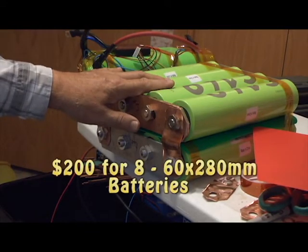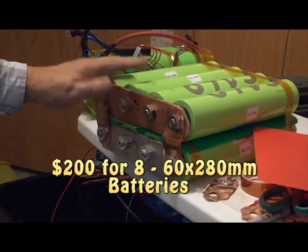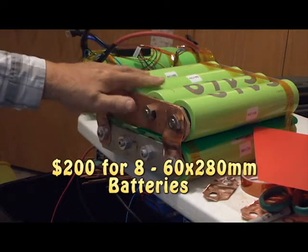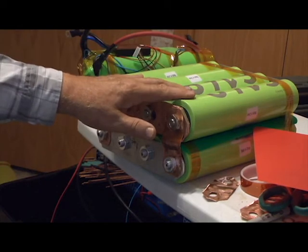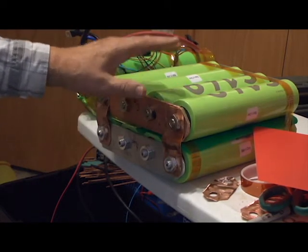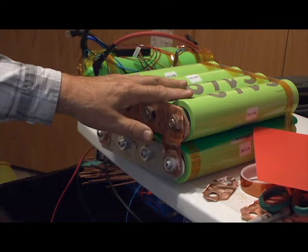These batteries I bought at Battery Hookup. They had a sale on for three days. They were $200 for four of them. They're 55 amps. They're 60 millimeters by 280 millimeters. And they are lithium iron phosphate batteries.